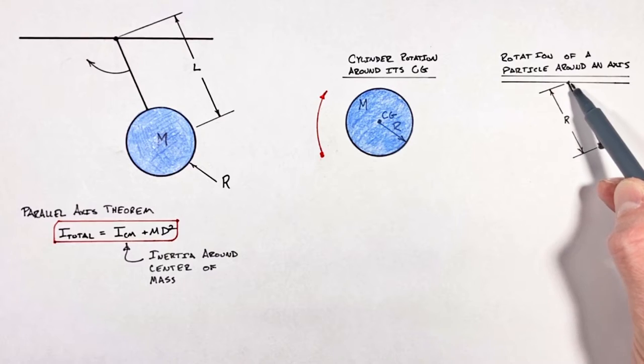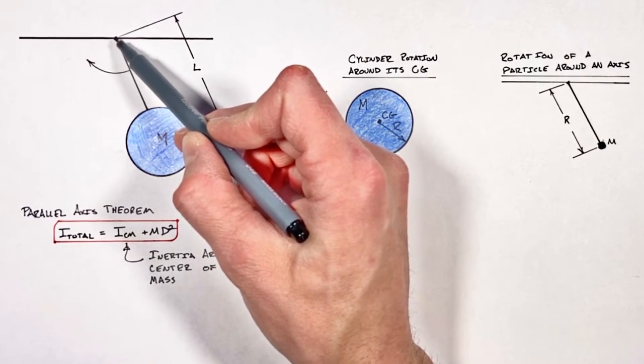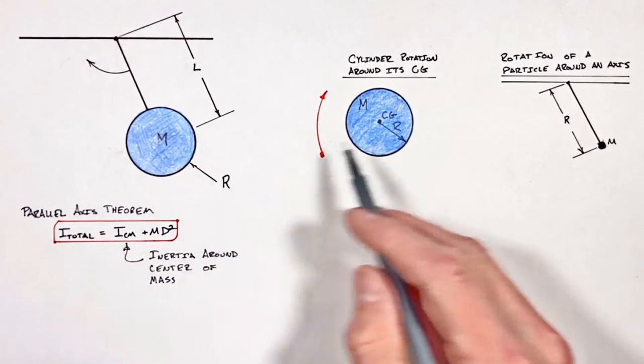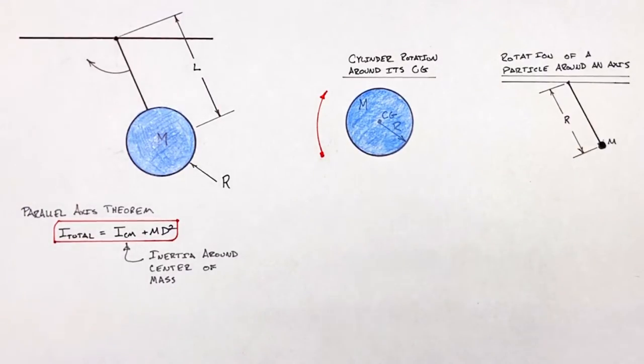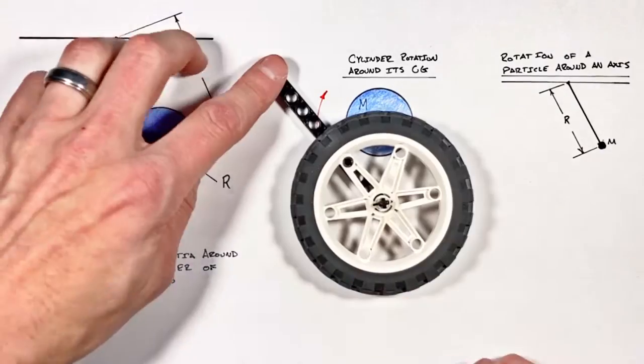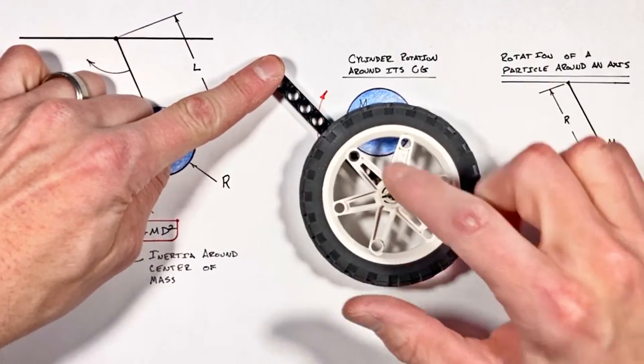some central point, which in this case would be this pivot point up here. Now understand this is hard to visualize, so don't worry, I brought visuals.